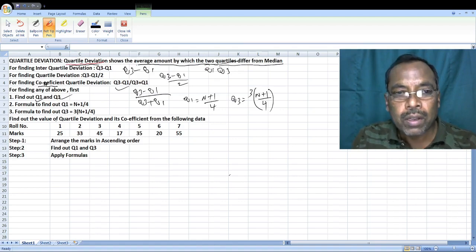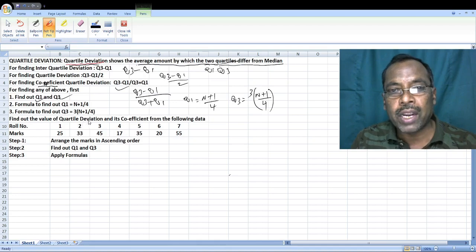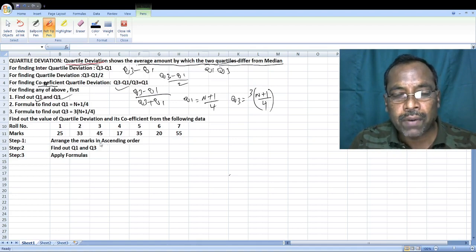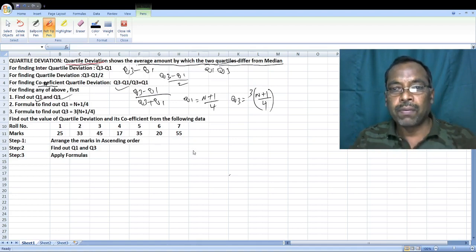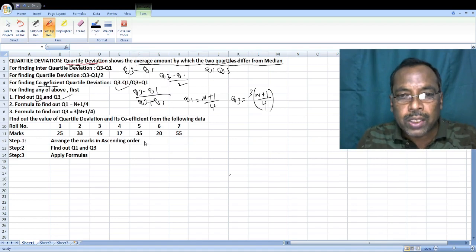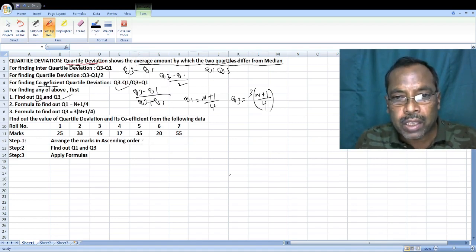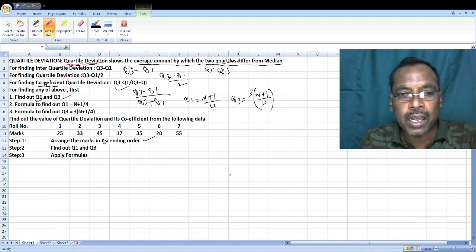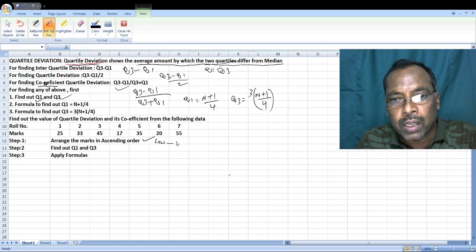Now students, these are the formulas to find out Q1 and Q3. Here data is given. Find out value of quartile deviation and its coefficient from the following data. Here we have 25, 33, 45, 17, 35, 20, 55. Arrange the marks in ascending order, lower value to bigger value.